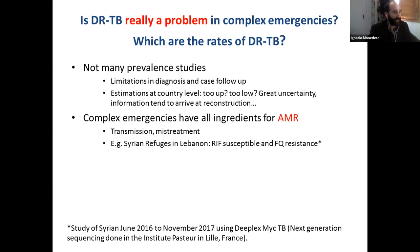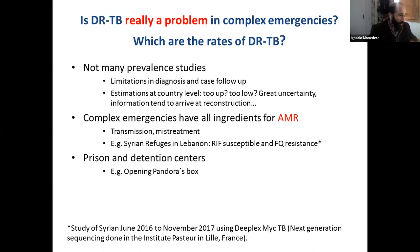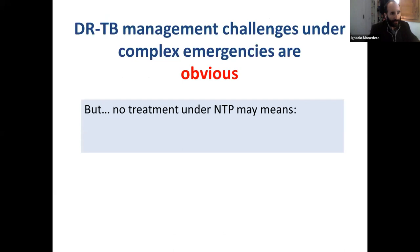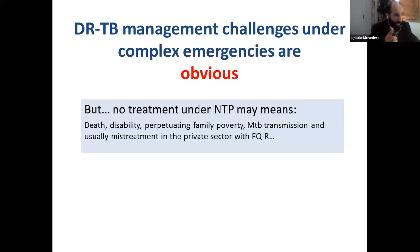More transmission, more mistreatment. What happens in prisons and detention centers is really an issue. The challenges are obvious, but if we don't treat under NTPs or we don't revitalize NTPs, there will be much more death, much more disability, perpetuating family poverty, increasing transmission. People will ask for treatment and probably end up in the private sector, being treated well or mistreated if there is no training. The other side of the coin: if properly supported, even countries in conflict are delivering surprisingly very good results.